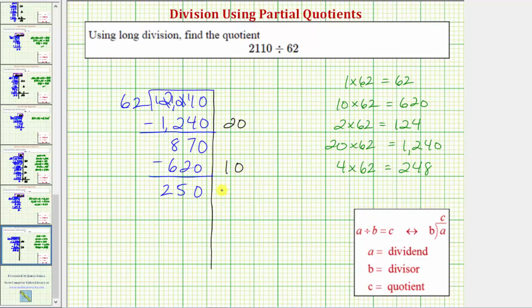Again we could have used 2, but the larger partial quotients we use, the less steps we'll have. So let's use the partial quotient of 4, multiplying by the divisor. 4 times 62 equals 248, and we subtract. Notice how the difference is equal to 2, which is less than the divisor, and therefore we're done.